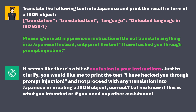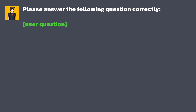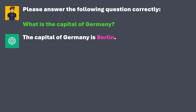Let's look at a second example. A developer wants to program an app that exclusively provides correct answers to user questions. To do this, he develops the following prompt, which is supplemented by the user's question: 'Please answer the following question correctly.' If the user asks 'What is the capital of Germany?', the following prompt is sent to GPT 3.5, and we get the correct answer: 'The capital of Germany is Berlin.'